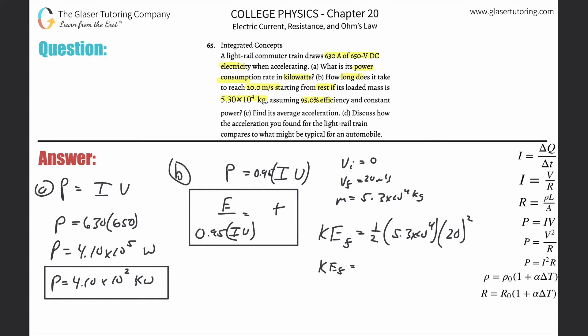0.5 multiplied by 5.3 times 10 to the fourth multiplied by 20 squared, and we get a value of about 1.06 times 10 to the 6.7, joules. So now all we need to do is take this value and plug it on in for the energy. 1.06 times 10 to the seventh, all divided by 0.95.